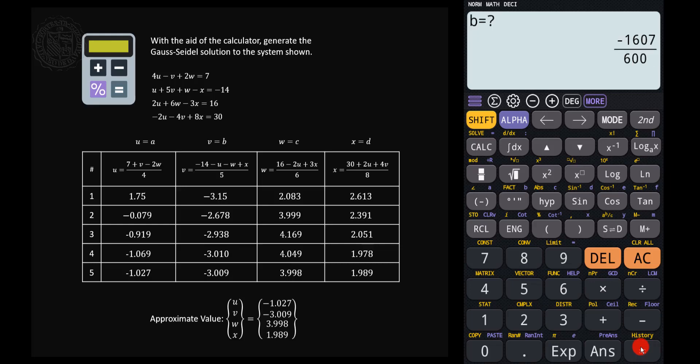And then let's just press equal again, equal, equal, then equal, then equal, then equal. In the third iteration, we have these values, and so on and so forth until you reach the fifth iteration.